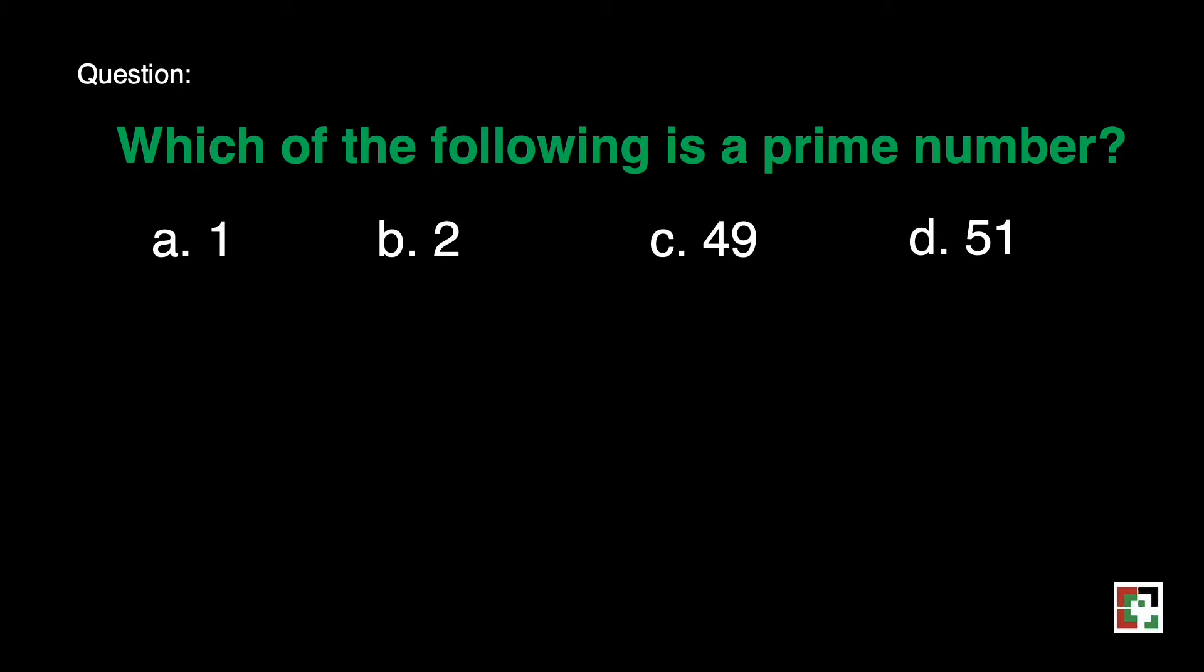The correct answer is letter b. Why b? Because 1 is not a prime nor composite because it has to have at least one set of factors. In order for 1 to qualify being composite, it has to have more than two factors. So 1 is neither prime nor composite.